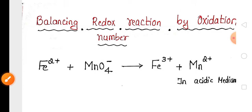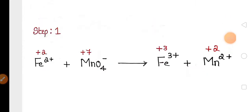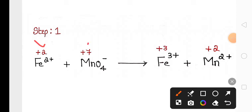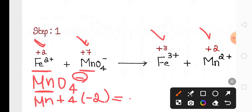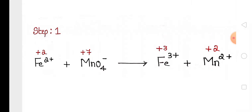We have a redox reaction equation that we need to balance according to oxidation number. In the first step, we write the oxidation number of each reactant and product above their symbol. Here Fe2+ oxidation number is +2. Manganese oxidation number in MnO4⁻ — with 4 oxygens each at -2 — sums to -1, giving manganese an oxidation number of +7. Fe3+ oxidation number is +3 and Mn2+ oxidation number is +2.